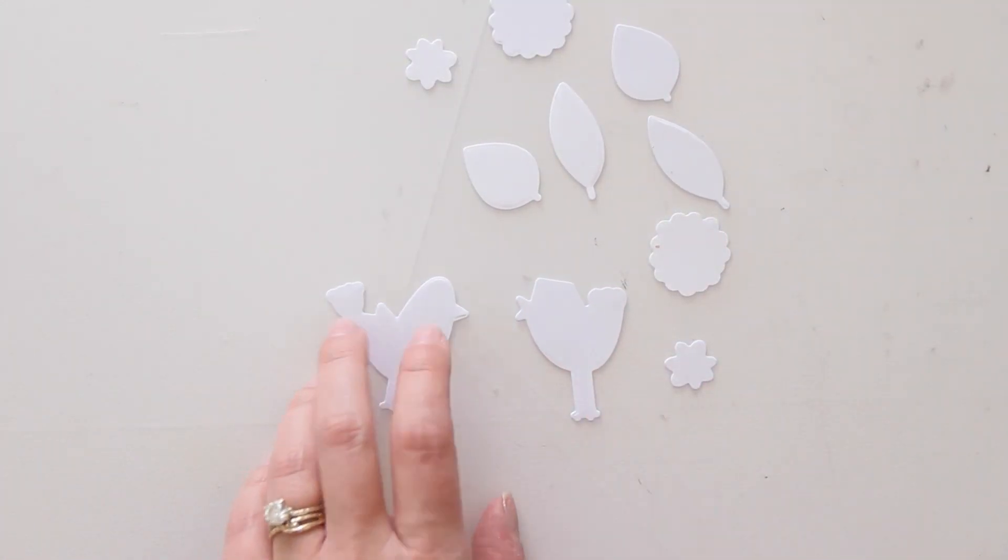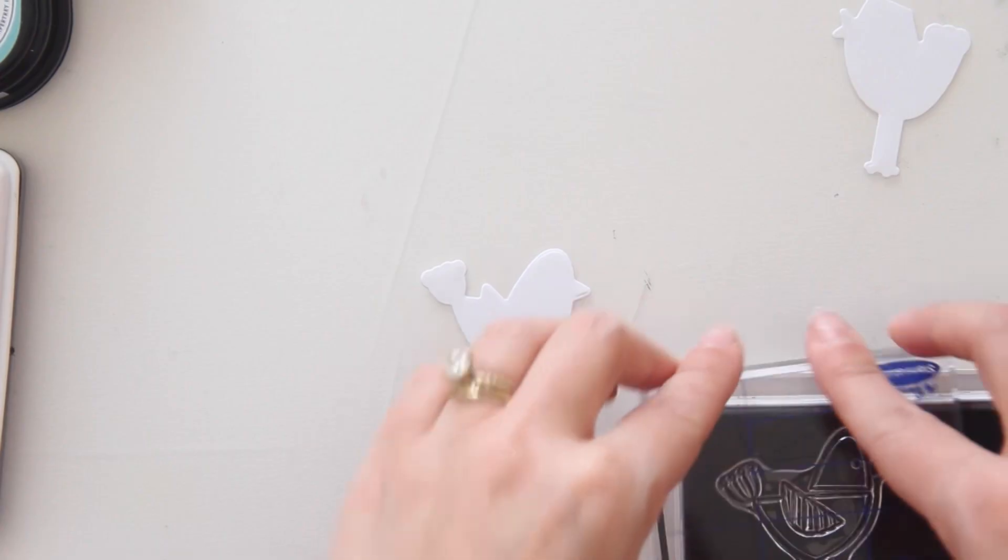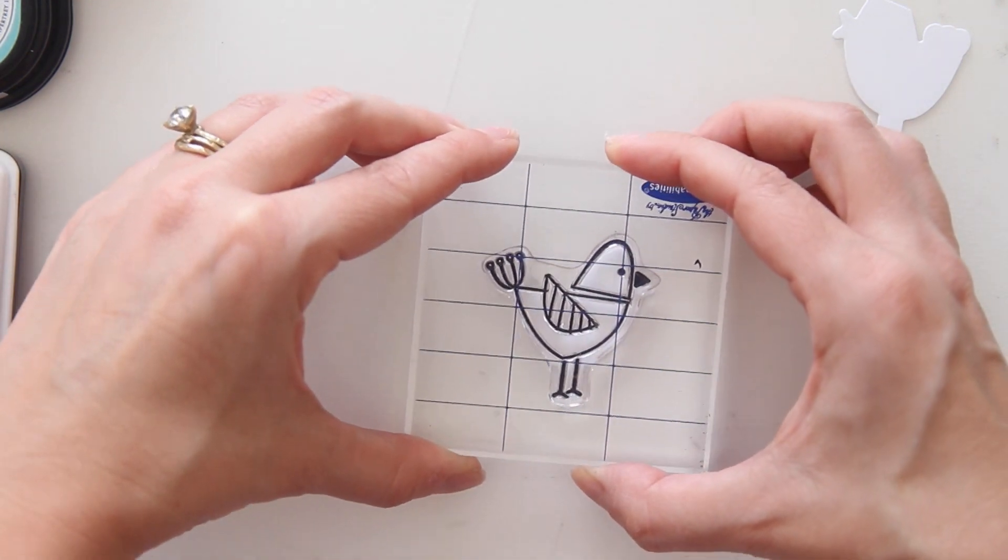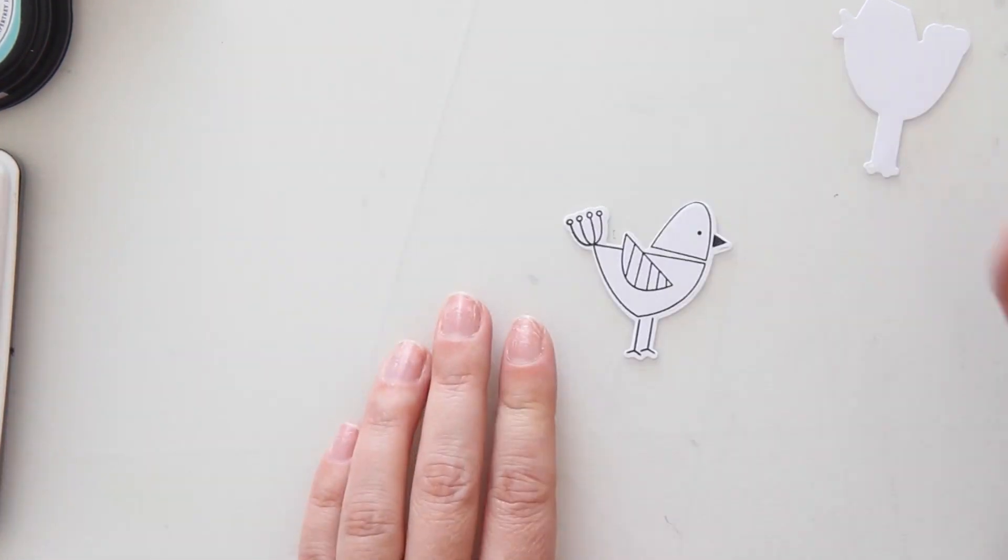Now, I'm going to stamp the outlines for each of those birds in black ink right on the die cut pieces. Of course, you could always do your stamping first and die cut later. Sometimes, I just prefer to do it this way.